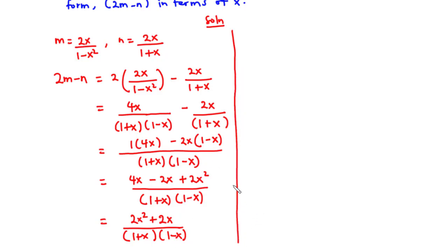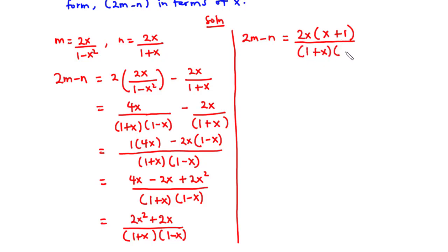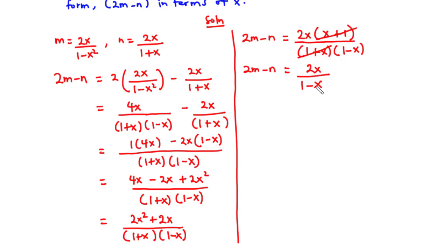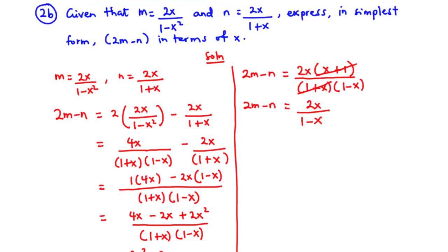So let's factor out 2x at the numerator. We have 2x times x plus 1 divided by 1 plus x times 1 minus x. Now addition is commutative, so x plus 1 is the same as 1 plus x. So we can cancel out 1 plus x, and we are left with 2x over 1 minus x. So 2m minus n is equal to 2x over 1 minus x in simplest form in terms of x.